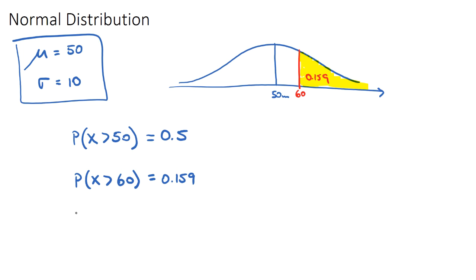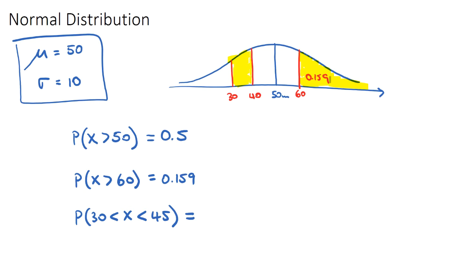We can also find the probability between two values. For example, what's the probability that a tree is between 30 and 45 meters? Using Normal CDF on the calculator, set the lower bound to 30 and the upper bound to 45, with mean = 50 and standard deviation = 10, and the calculator gives the answer directly.